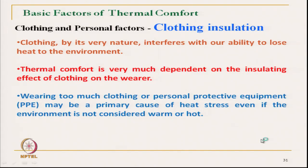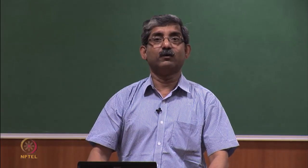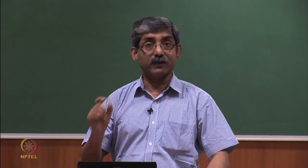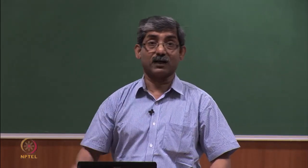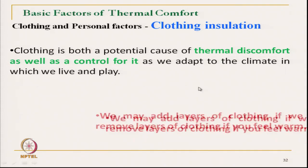because it will provide unnecessary insulation, which may cause heat stress — it is a primary cause of heat stress in personal protective equipment. On the other hand, if clothing does not provide enough insulation, our body will lose heat at an unnecessarily high rate, and we may end up with frostbite or hypothermia in extreme cold conditions. Clothing insulation control is very important. Clothing is both a potential cause of thermal discomfort and can also enhance comfort as it adapts to the climate in which we live or play.